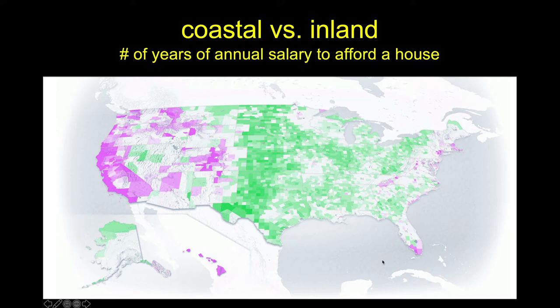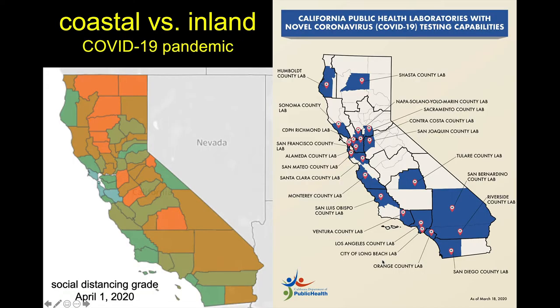Looking at how many years you'd need to work to afford a house in a given region, there's clear concentration of high housing costs on the coasts and lower costs in the middle of the country. Even looking at our most recent pandemic data, we see the same coastal-inland divide.